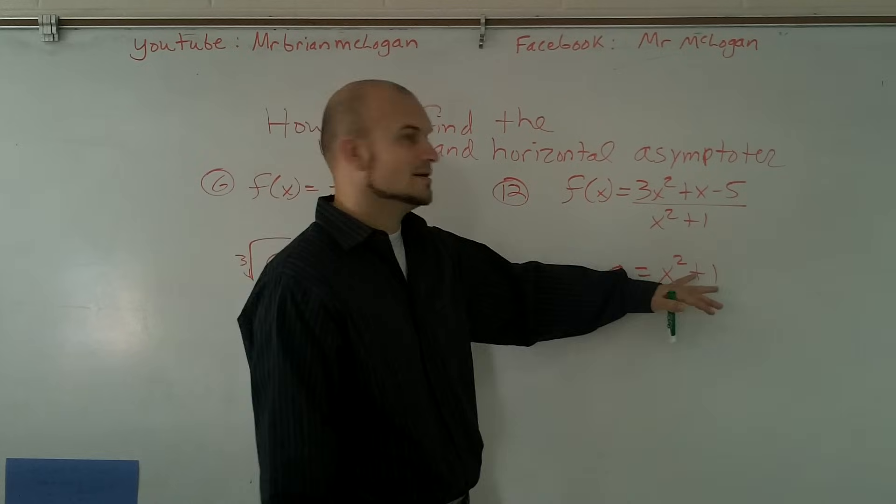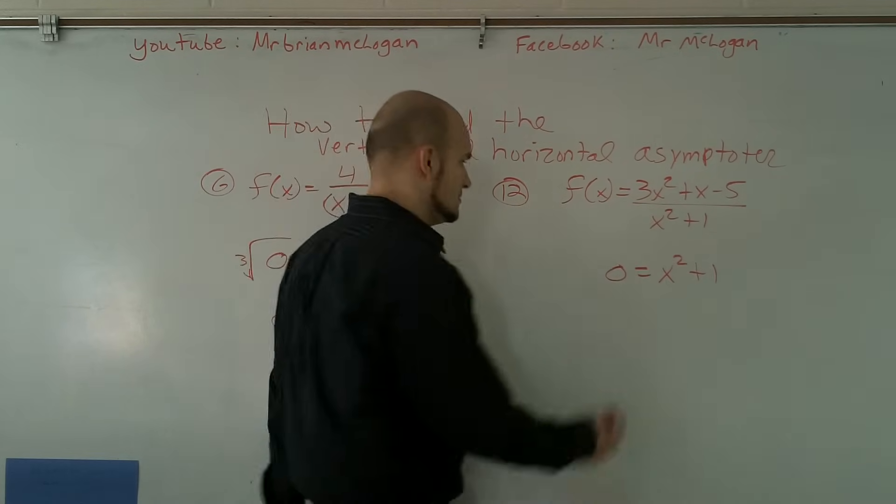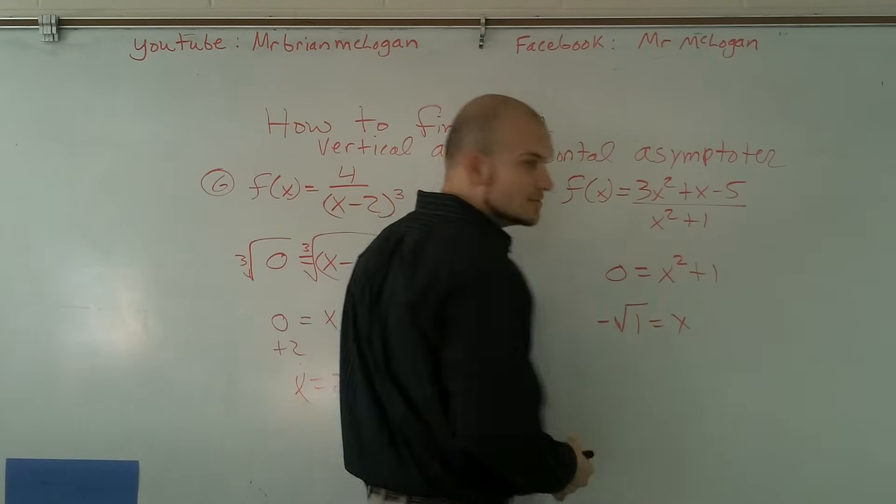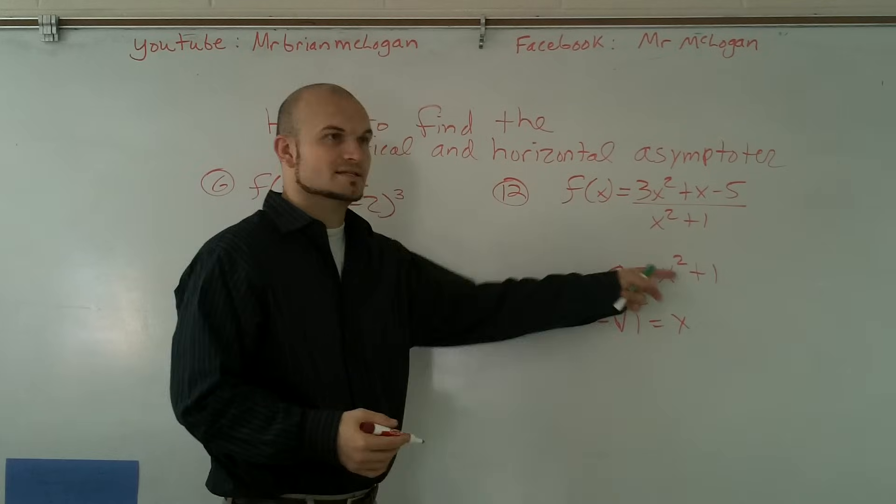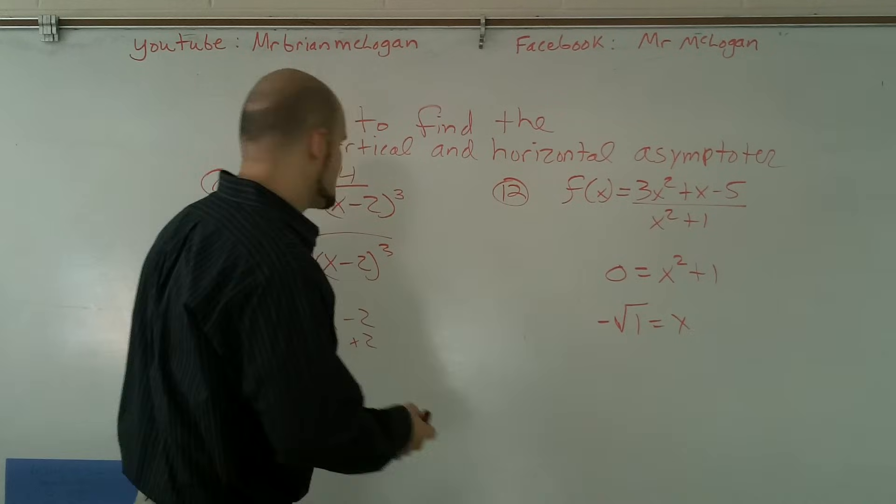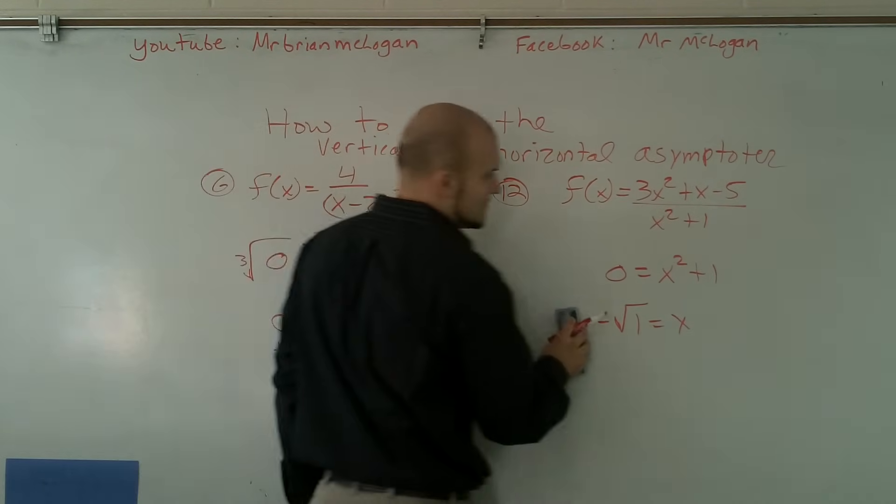Over here, I notice that there is no number that—that's going to be an imaginary number. That's going to be i times square root of 1 equals x, right? We work on taking the i because that's going to be negative. If you take the root, it's going to be square root of negative 1. So therefore, there is no x real, there's no x intercepts or vertical asymptotes right here.